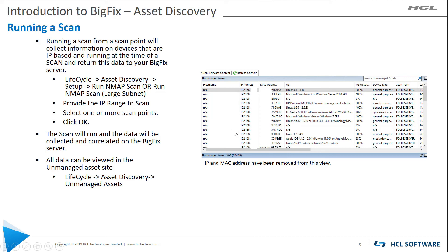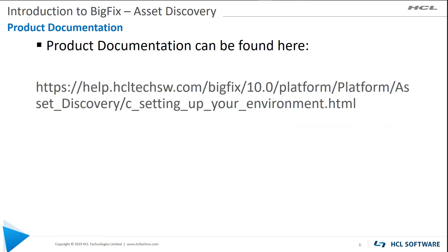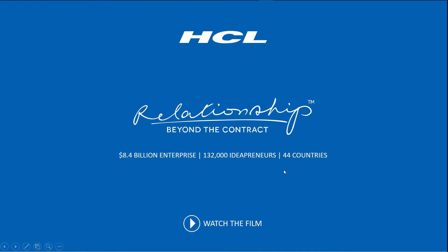As you can see in the example here, we get back some MAC address information and some IP information. The OS is basically Nmap's process of determining what the OS is — it does a pretty good job on that. It's a great little tool to be able to figure out what is in your environment, or if there are things coming into your environment that you didn't expect to find. Documentation can be found here. That concludes our coverage of Asset Discovery. Thank you.